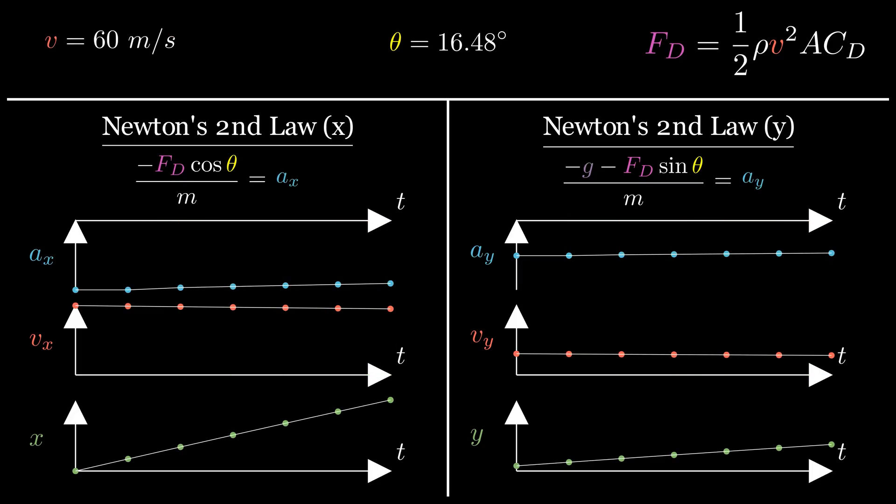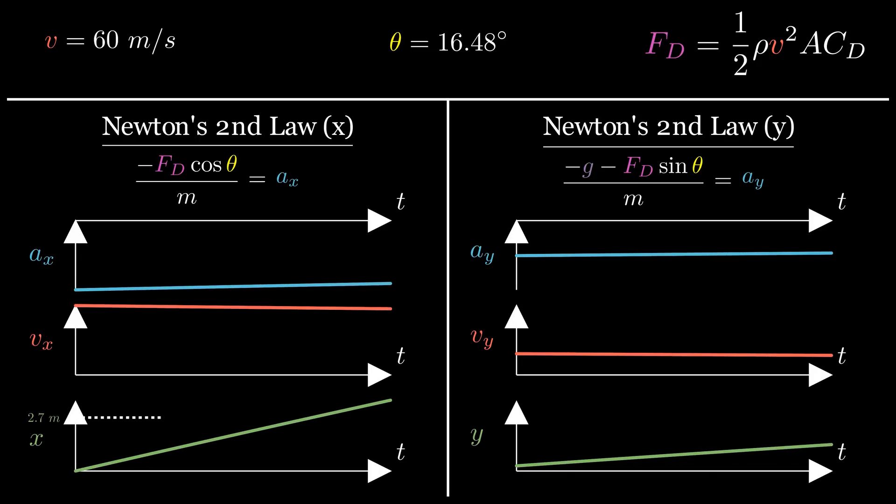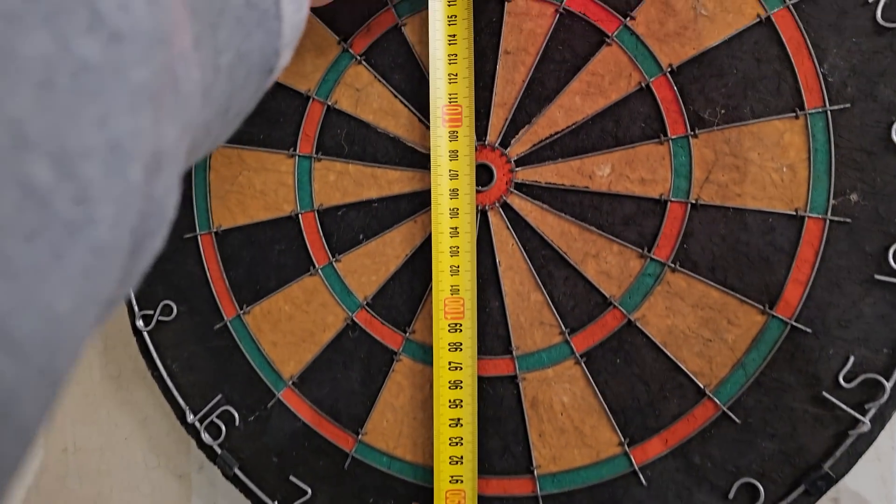But in case I chose too large of a time step, I did it again with a much smaller one to minimize numerical error. Anyway, I now see that the dart should reach the dartboard 0.045 seconds after launch, and after traveling in the air that long, it'll be at a height of 1.07 meters. So that's where the bullseye of the dartboard was placed.